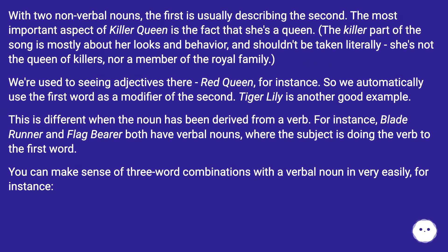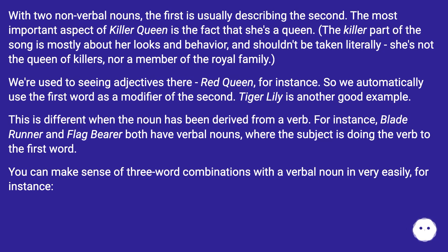With two non-verbal nouns, the first is usually describing the second. The most important aspect of killer queen is the fact that she's a queen. The killer part of the song is mostly about her looks and behavior, and shouldn't be taken literally — she's not the queen of killers, nor a member of the royal family. We're used to seeing adjectives there, red queen for instance, so we automatically use the first word as a modifier of the second. Tiger lily is another good example. This is different when the noun has been derived from a verb. For instance, Blade Runner and Flag Bearer both have verbal nouns, where the subject is doing the verb to the first word. You can make sense of three-word combinations with the verbal noun very easily.